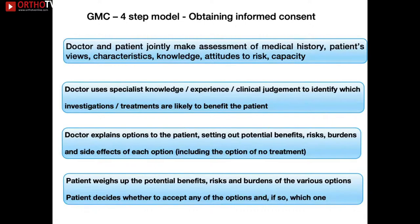The GMC four-step model of obtaining informed consent involves: assessing the patient's views, characteristics, knowledge, and attitudes towards risk; deciding based on expertise which investigations or treatments are likely to benefit them; explaining all options with a balanced assessment of risks and benefits including the option of doing nothing; then giving the patient a chance to reflect and return with their decision — whether that is declining surgery or requesting a hip replacement.